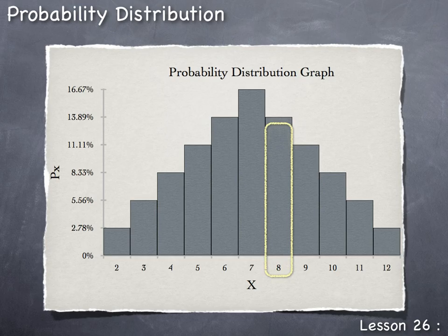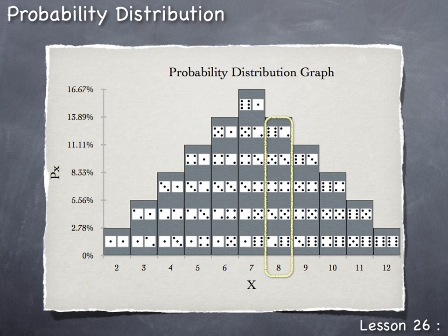The probability of rolling an 8 in craps is approximately 13.89%. Reading the height of a bar in the histogram communicates the probability without needing to count all possible outcomes. Rolling an 8 can occur five ways: 2+6, 5+3, 4+4, 3+5, or 6+2. With two six-sided dice there are 6×6=36 total possible outcomes, so the probability of rolling an 8 is 5/36. A probability distribution eliminates the need to count all outcomes each time.